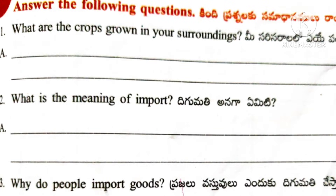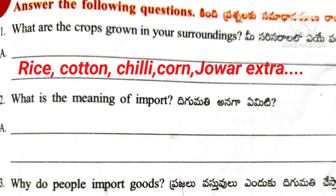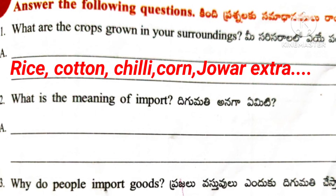Roman number 2. Answer the following questions. Question number 1: What are the crops grown in your surroundings? Answer: Rice, Cotton, Chili, Corn, Jowar, etc. Students, you can write other crops also which are grown in your surroundings.